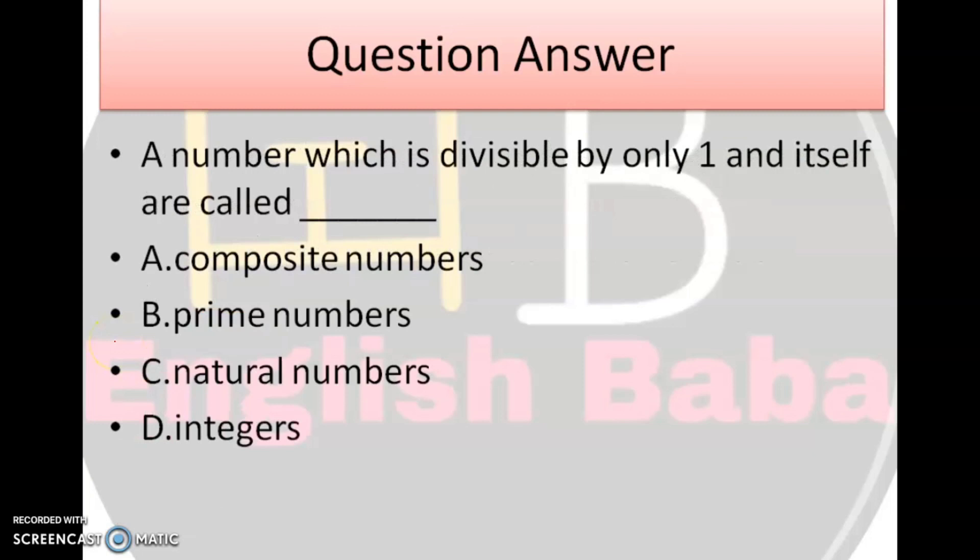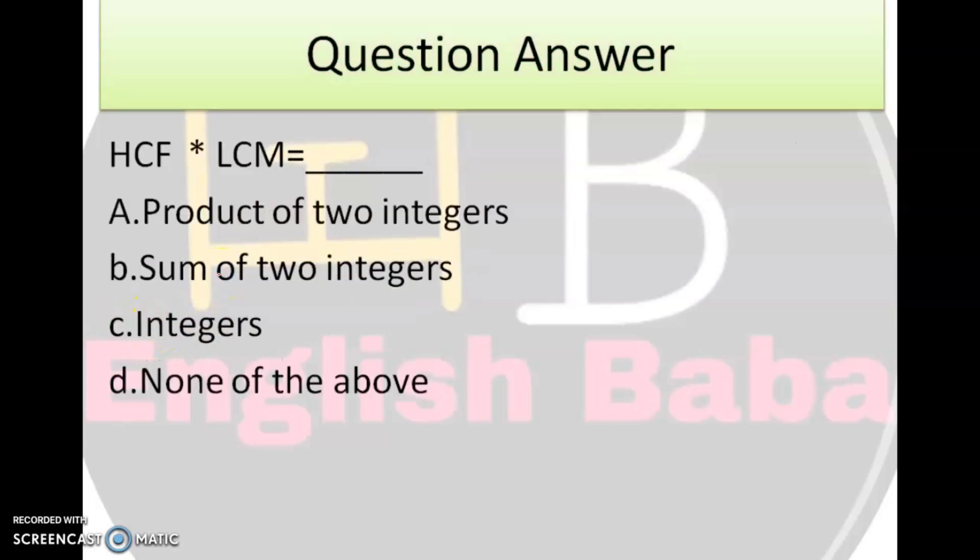Next question. A number which is divisible by 1 and itself are called dash. Yeh to hamne bahut bahut bachpan se padhte aa rahe hain, ki koi bhi number ek se divisible ho, ya itself, to use kya kehte hain, composite number? Nahin, nahin. Prime numbers, natural numbers, integers. Option number B is the right answer, prime numbers.